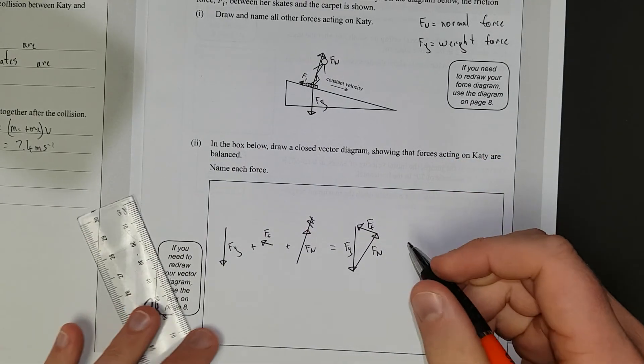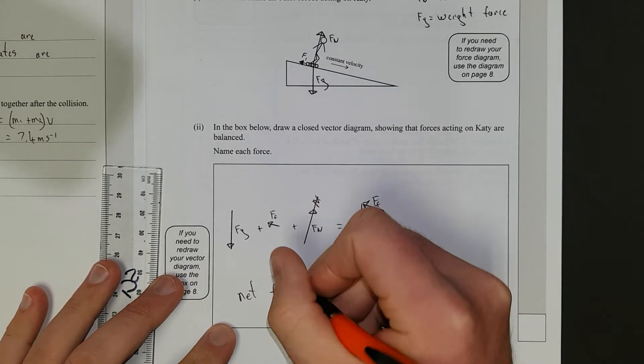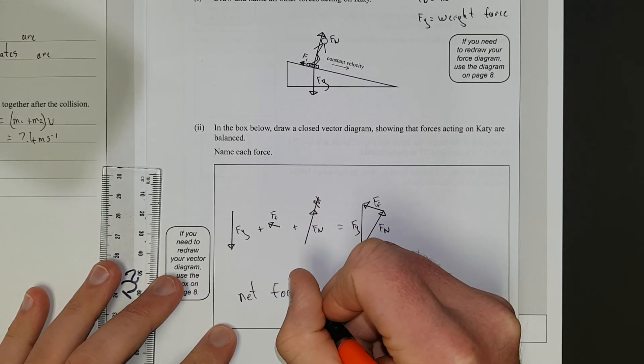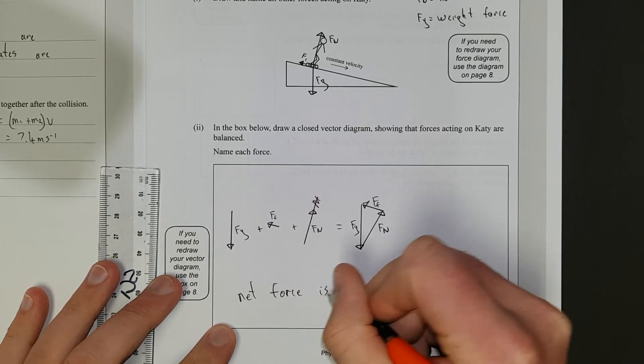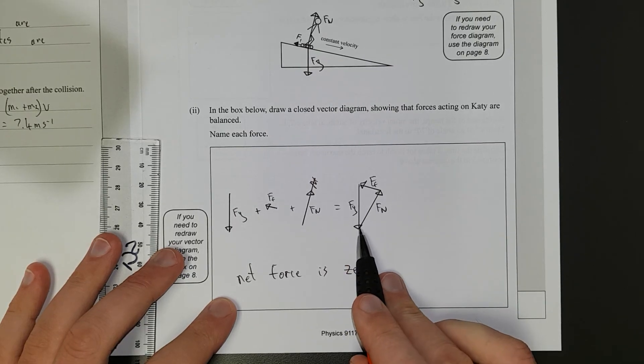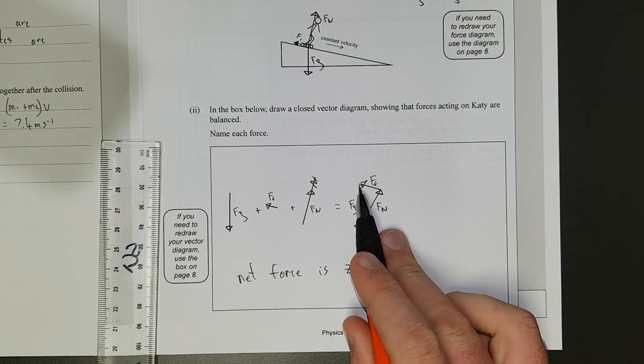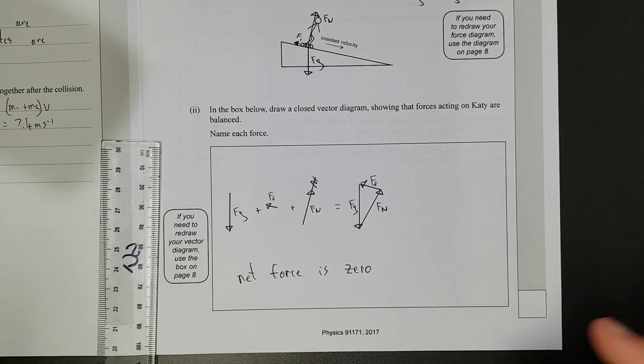And, they're labelled, and as we can see, net force, ooh, can we see that we can? Force is zero. Because, this is where we started. We went down, up, and then back to where we started again. So, the start and the finish are the same, which means our net force is zero. Okay.